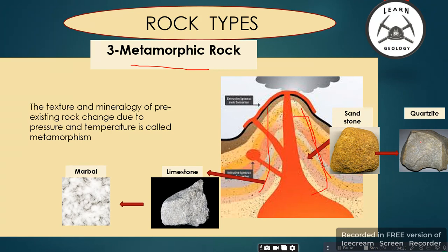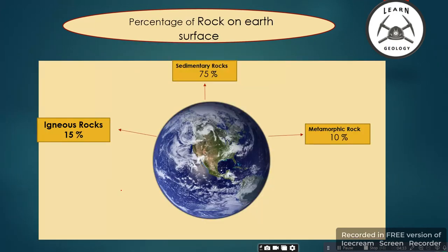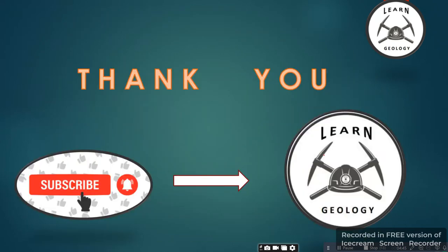For example, sandstone is converted into quartzite, and limestone is converted into marble. Regarding the percentage of rocks on the earth's surface: 75% are sedimentary rock, 15% are igneous rock, and 10% are metamorphic rock. I hope you learned a lot from this video. Please subscribe to our YouTube channel 'Learn Geology' for more updates. Thank you, and have a nice day!